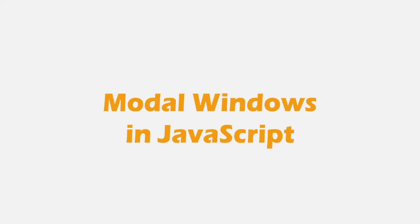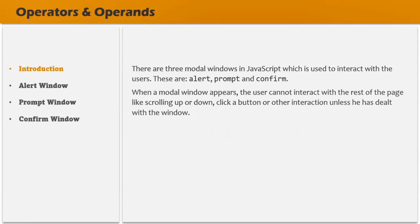Before we proceed further and talk about conditional statements like if-else, switch, etc. in JavaScript, let's learn about the different modal windows which a browser provides and which we can make use of in our JavaScript code. These modal windows we can use to show some message to the user or to get some input from the user. In JavaScript there are three modal windows: alert, prompt, and confirm. We have already seen the alert modal window.